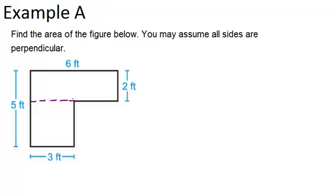If we draw a line there, we can see it's made up of two rectangles. So what we can do is find the area of each of these rectangles and then add it up in order to find the area of the full composite shape.